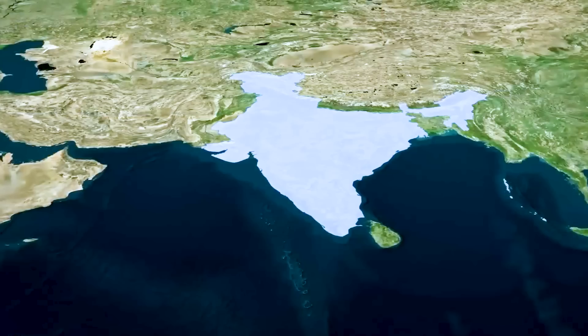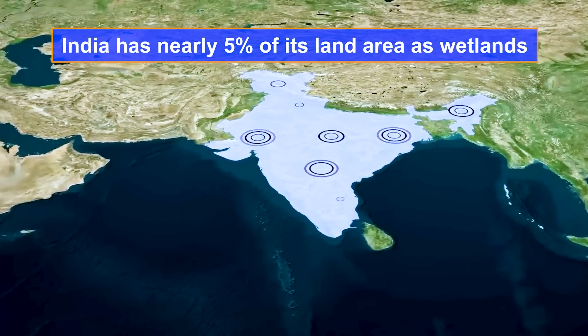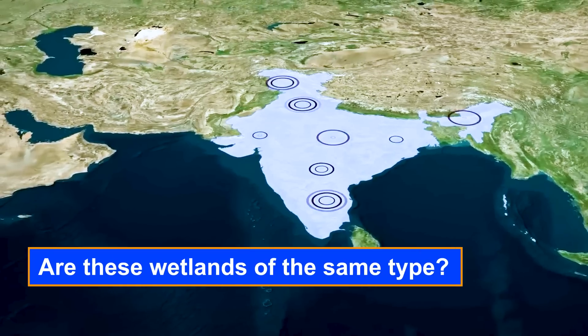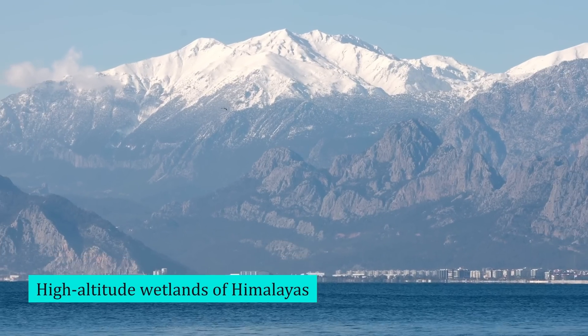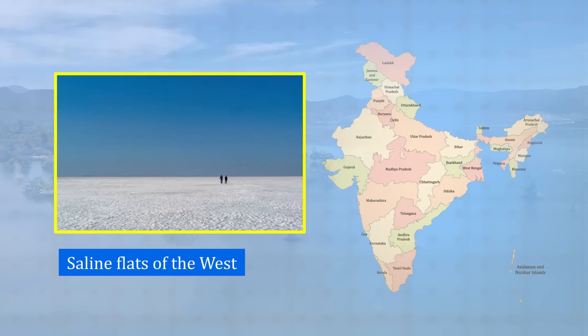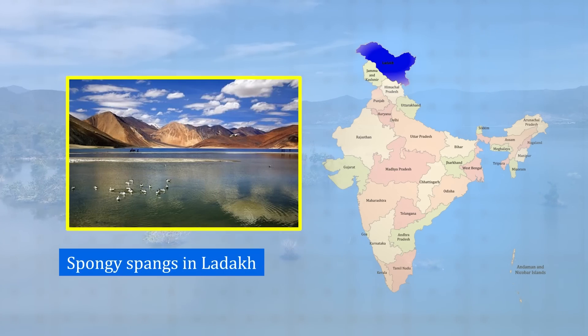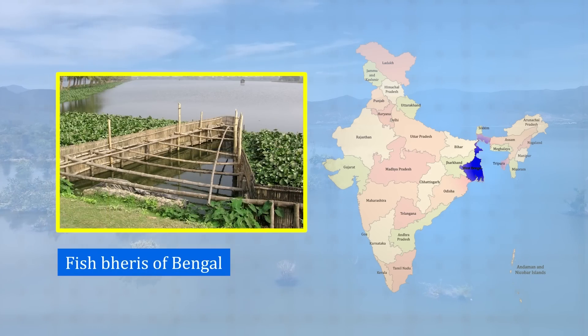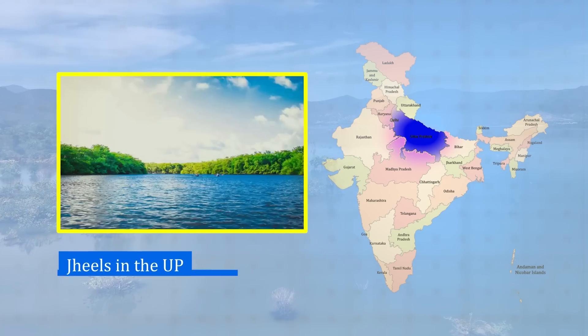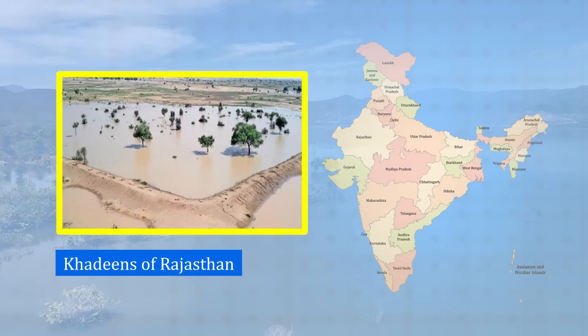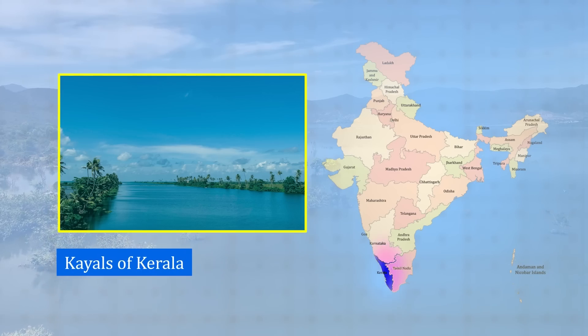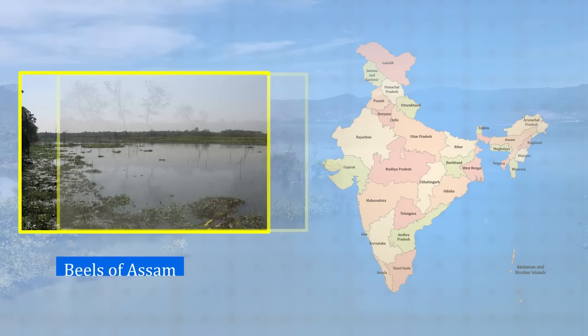India has nearly 5% of its land area as wetlands, and they are not all of the same type. There are many kinds of wetlands in India known by many different names — from the high altitude wetlands of the Himalayas to the saline flats of the west, from spongy spangs in Ladakh to fish berries of Bengal, from jils in Uttar Pradesh to kulams of Tamil Nadu, from khadins of Rajasthan to khayals of Kerala, and from chors of Bihar to beals of Assam.